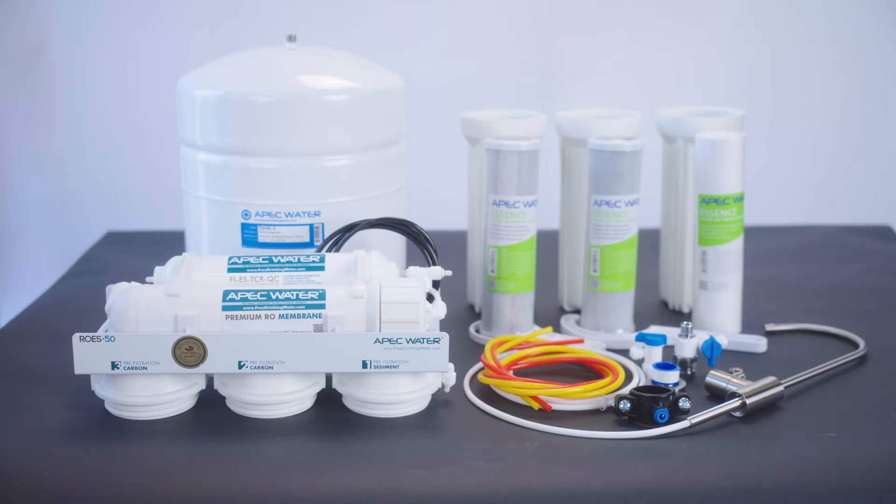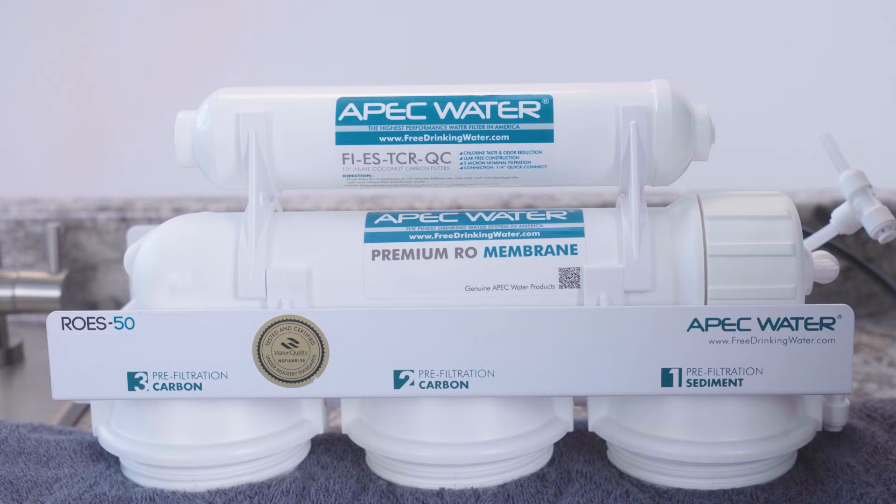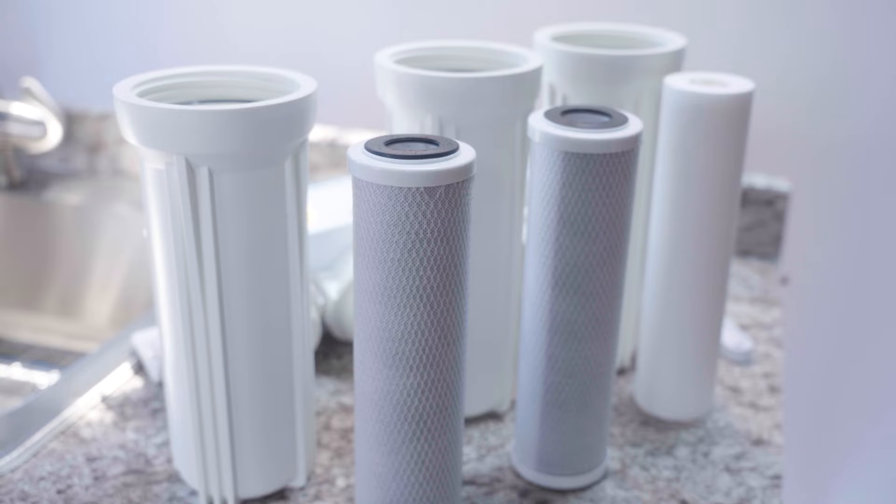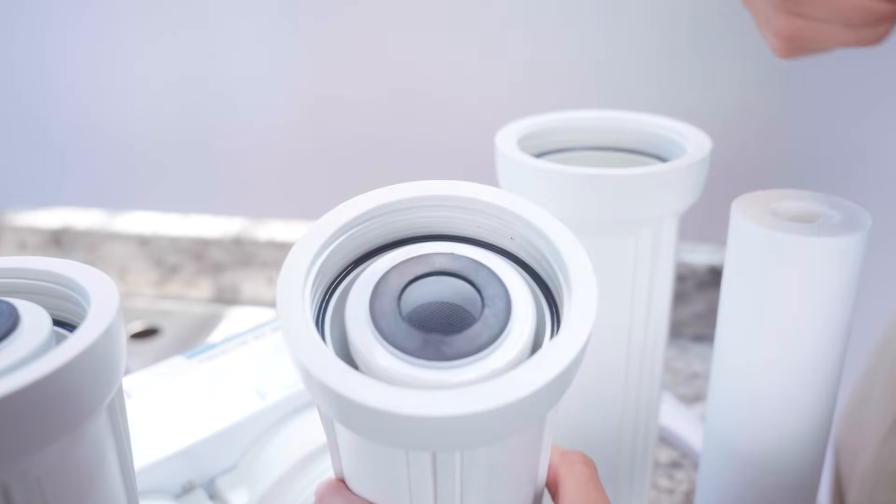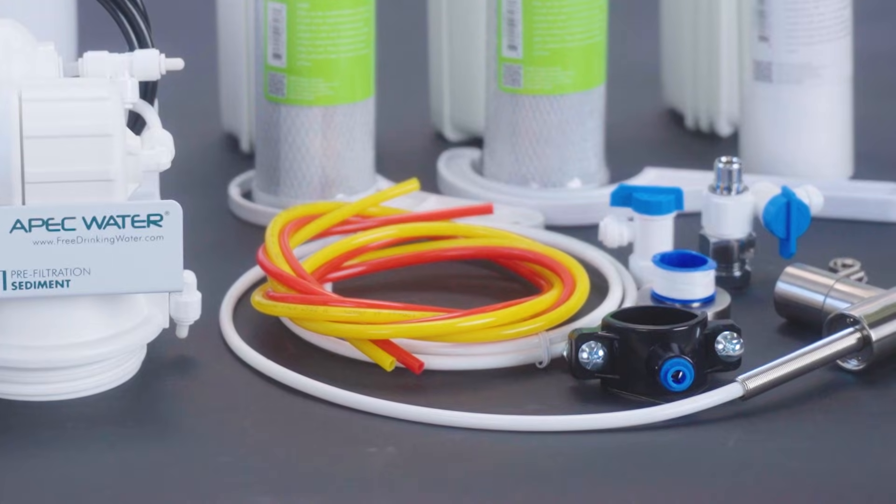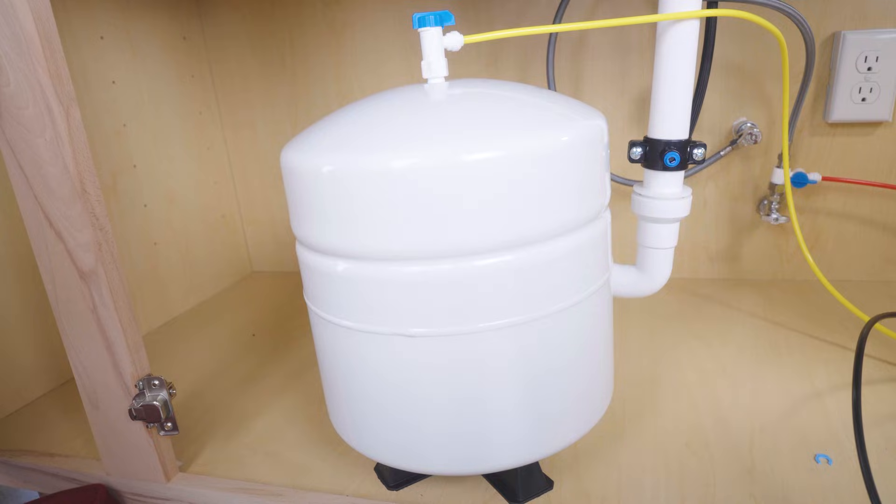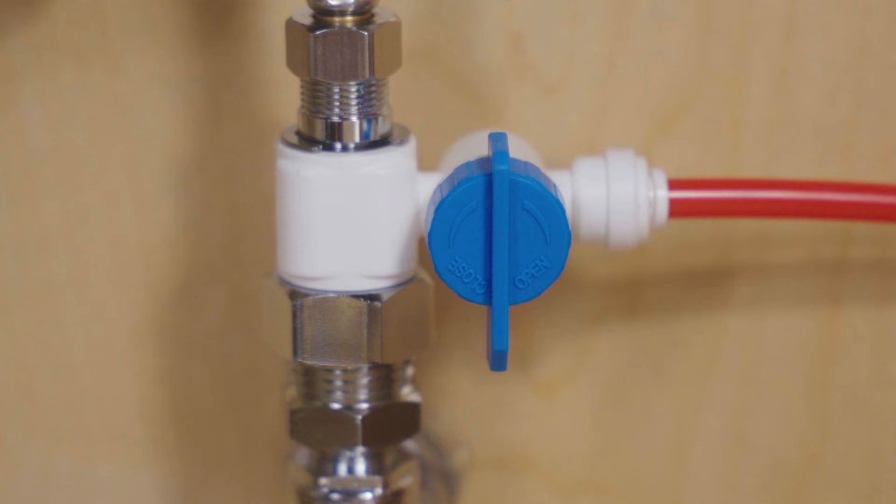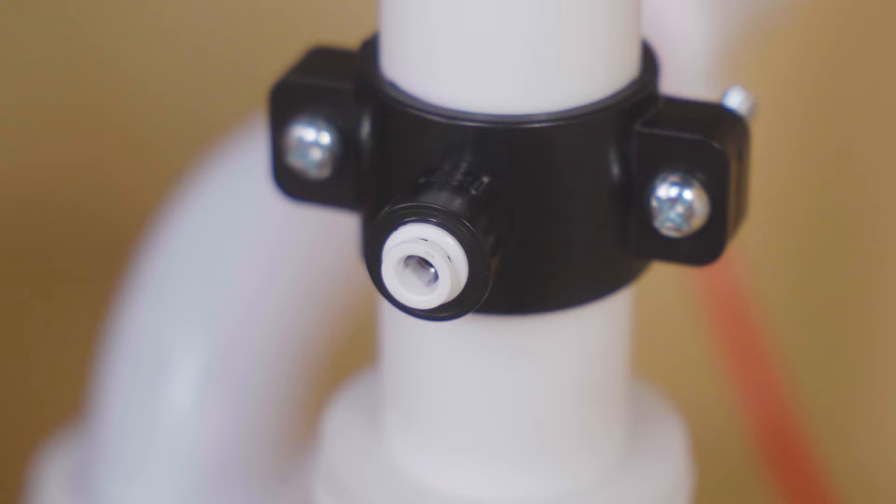Let's start by checking what's in the box. The RO system with membrane pre-installed, three filter housings, sediment and carbon block filters, color-coded tubing, pressurized tank with valve, lead-free faucet kit, feed water adapter and drain saddle, filter housing wrench.